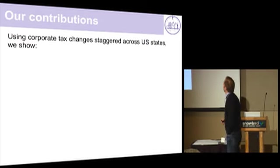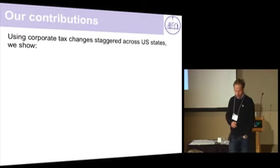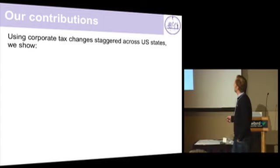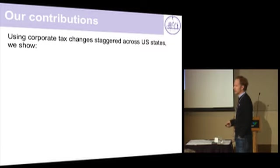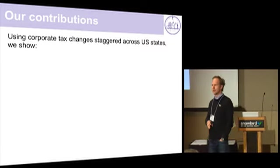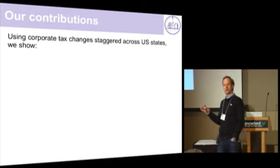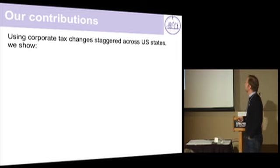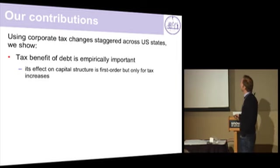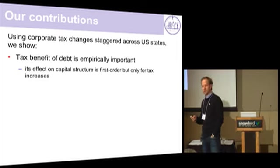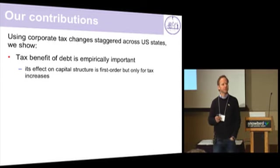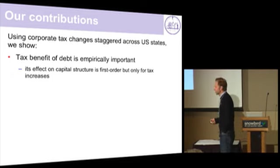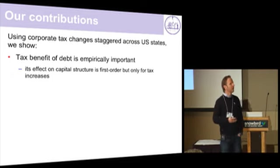Here's how we try to address the challenge of not having a random assignment. We use corporate tax changes that occur at the state level and staggered over time. We have about 20-odd years in the US across all US states, and we show that, first of all, the tax benefit is first-order important.